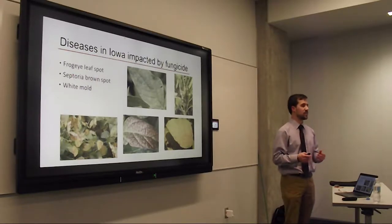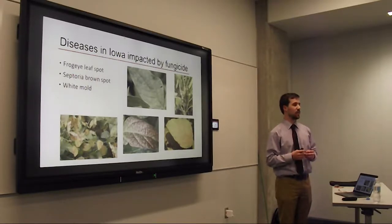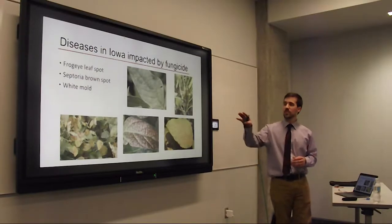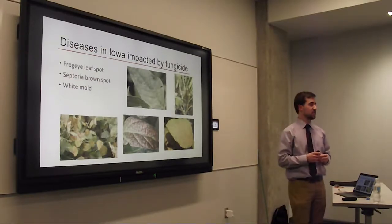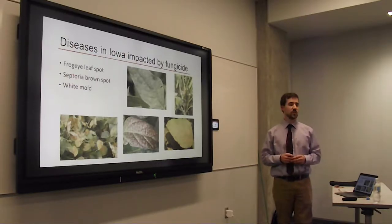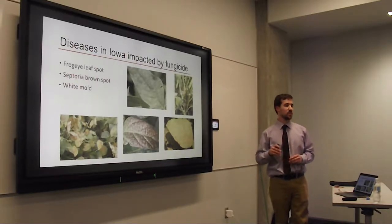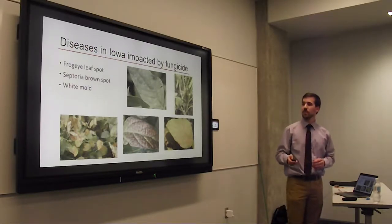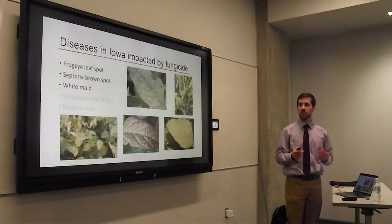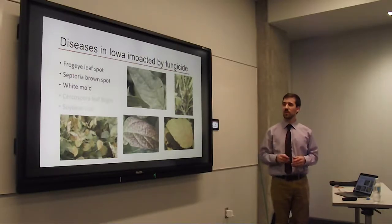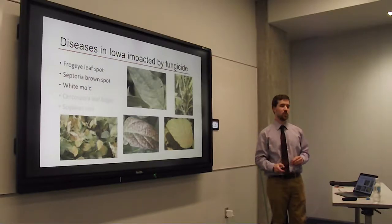Soybean rust really got farmers interested in fungicides, and although it never became super problematic, it opened their eyes to other important soybean diseases. These include frogeye leaf spot, septoria brown spot, and white mold. Frogeye is a disease you see in the upper canopy on the topmost soybean leaves, while septoria and white mold are diseases you see in the lower canopy. So already with just three diseases, you can see they require somewhat different management.